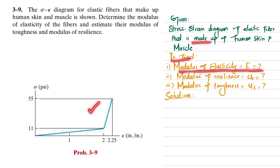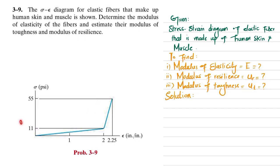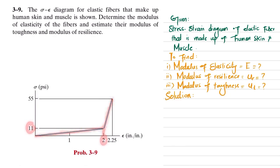What we have to find is the modulus of elasticity E, modulus of resilience Ur, and modulus of toughness Ut. From the stress-strain diagram you can see the elastic limit, and at that point stress is 11 psi while strain is 2. Further along, there is a stress of 55 psi and strain is 2.25.